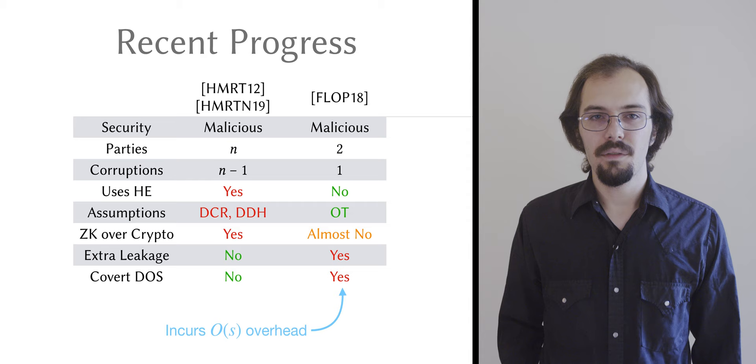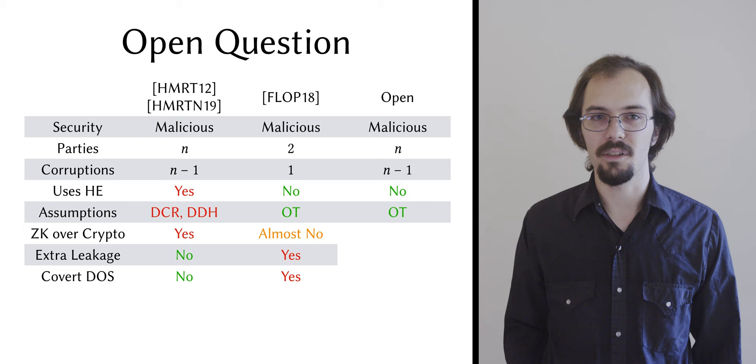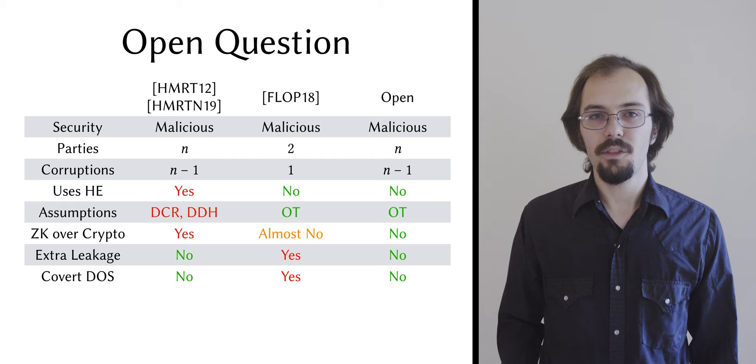In the wake of these two works, then, we have an open question. Can one build a protocol with support for arbitrarily many parties and malicious security against a dishonest majority, which has flexible assumptions, doesn't require homomorphic encryption, doesn't use expensive zero-knowledge over cryptographic statements, and gives the adversary no extra leakage or denial-of-service ability? In this work, we answer in the affirmative.